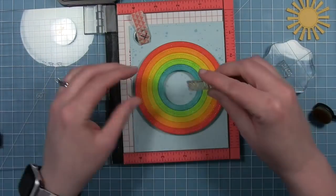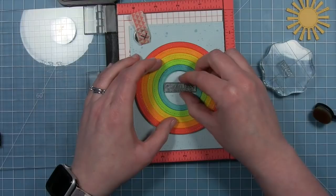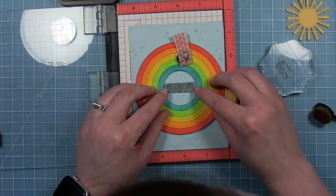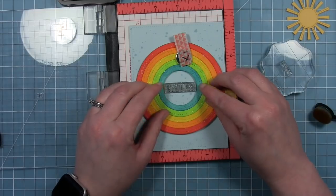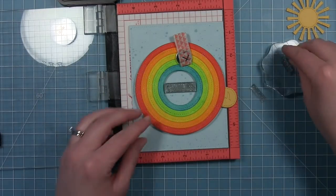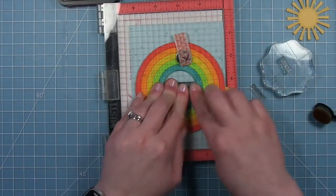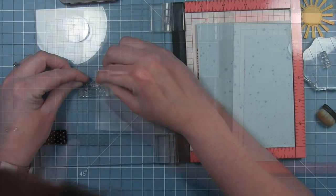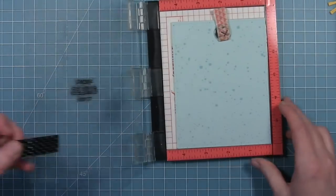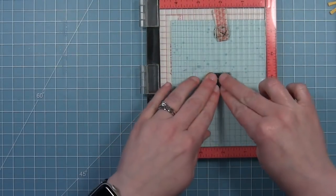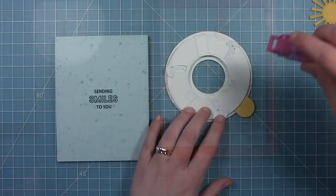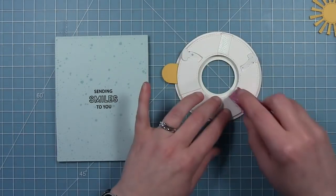So now I'm going to put my sentiment in the center and I'm using some stamps from the offset sayings birthday. So it's going to say sending smiles your way. So I'm lining up the smiles which is the big part of the sentiment. I'm going to pick that up with my misti door and instead of trying to line all those up inside that circle I'm just lining them up with the grid once that middle one is in the right place. Then I can stamp it down on my card base and then I can attach my iris.